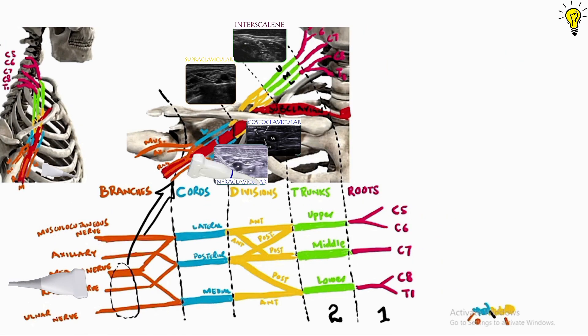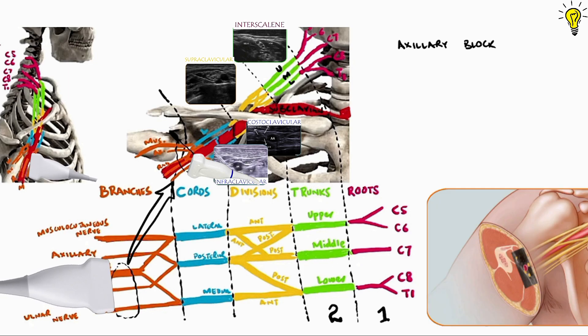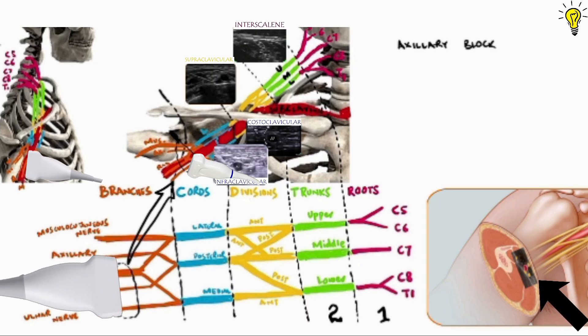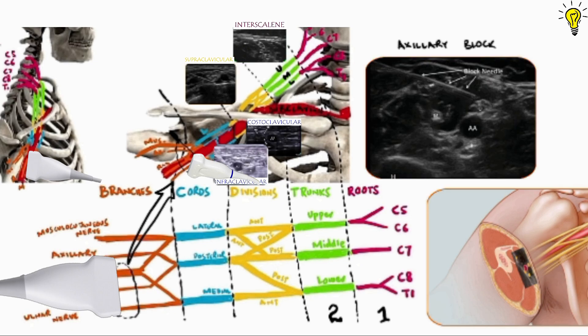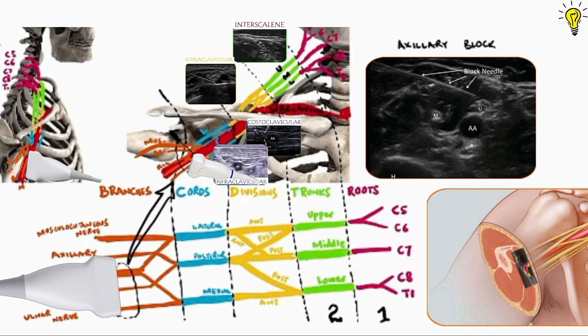Let's place transducer now in axillary region at level of axillary artery. As the probe dissects this region through the artery and nerves as shown, the image appearing in screen shows axillary artery and surrounding nerves of ulnar, median and radial. Also you can see in this image the musculocutaneous nerve in a distance between the coracobrachialis and bicep brachial muscle.